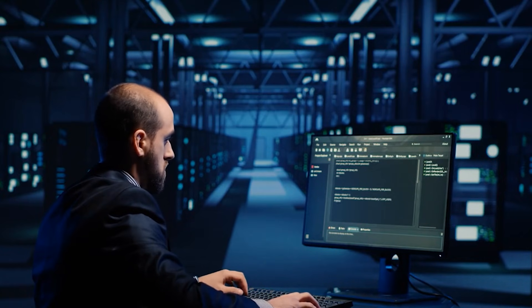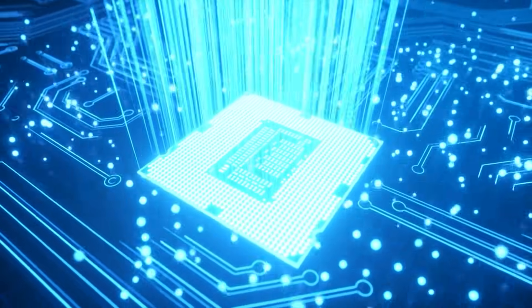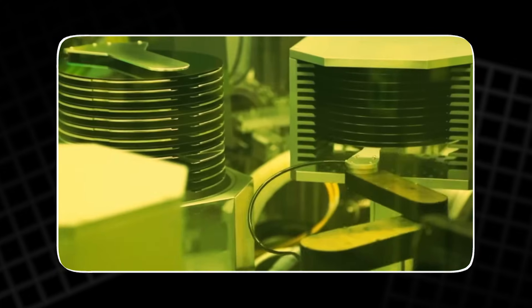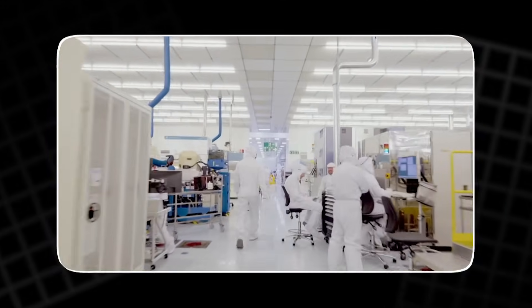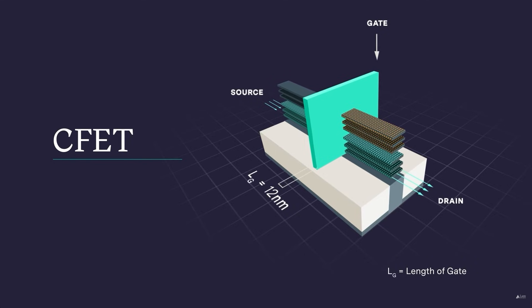If cities build upward when land runs out, why can't chips do the same? If we cannot shrink in two dimensions, we must rise in the third. Stack one transistor on another, and you double the density at once. That idea gave birth to CFET technology.